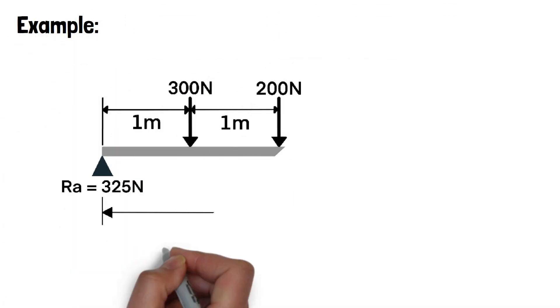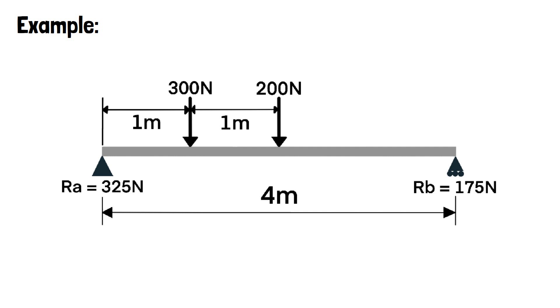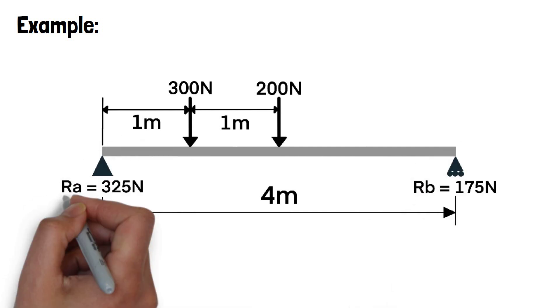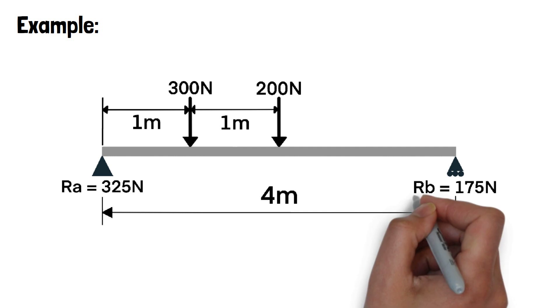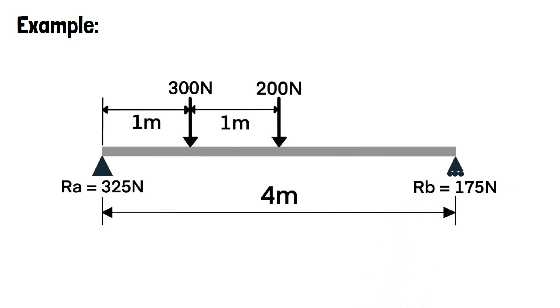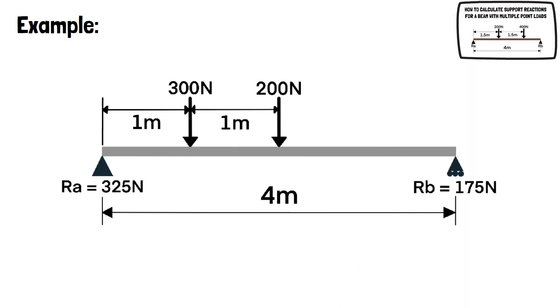Let's work through an example of how to draw the shear force and bending moment diagrams for a beam with more than one point load. The beam is 4 metres in length and has supports at either end labelled RA and RB. We know that RA equals 325 newtons and RB equals 175 newtons. If you need help calculating these, please watch our video on how to calculate the support reactions of a beam with multiple point loads — either click the link in the top right of the video or follow the link in the video description box.